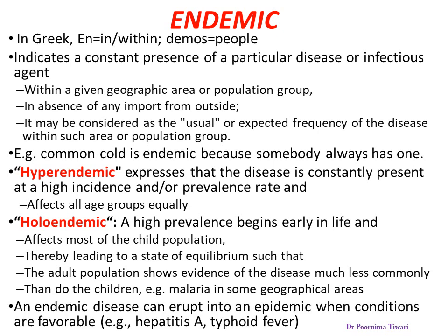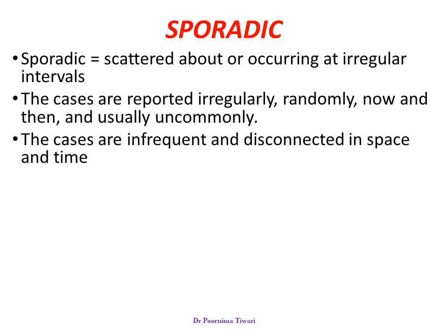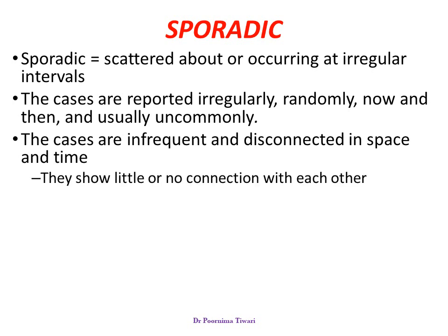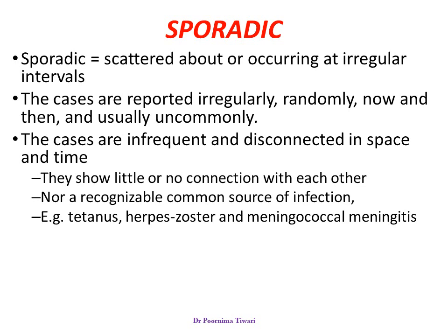An endemic disease can erupt into an epidemic — the numbers can rise unusually when conditions are favourable. For example, hepatitis A and typhoid fever can cause outbreaks. A sporadic disease means that cases of the disease are seen irregularly or randomly, usually not that frequent — the cases are infrequent and disconnected in space and time. You see one case here, sometime later one case at another place, with no connection between any two cases. Hence, a common source of infection cannot be recognised. Examples are tetanus and herpes zoster.